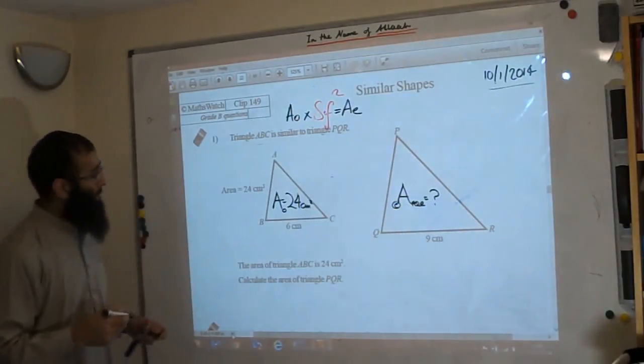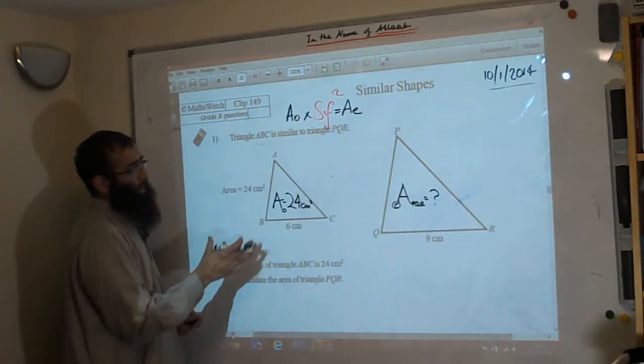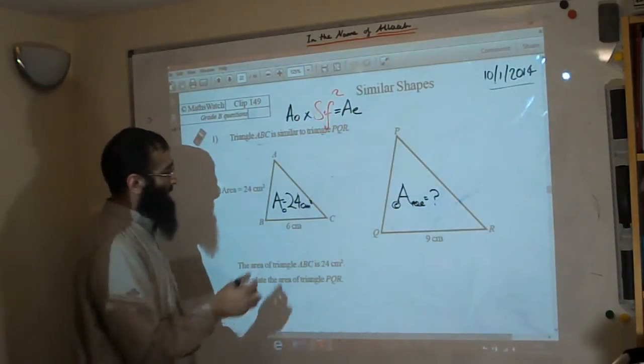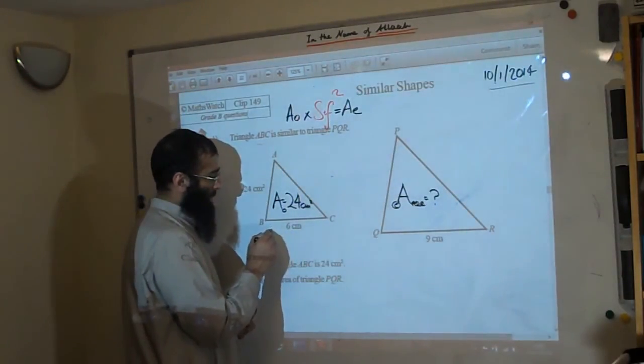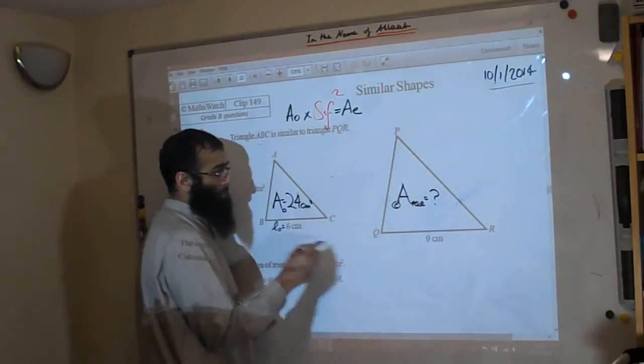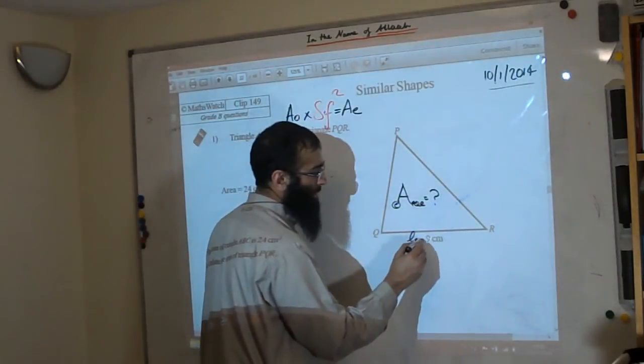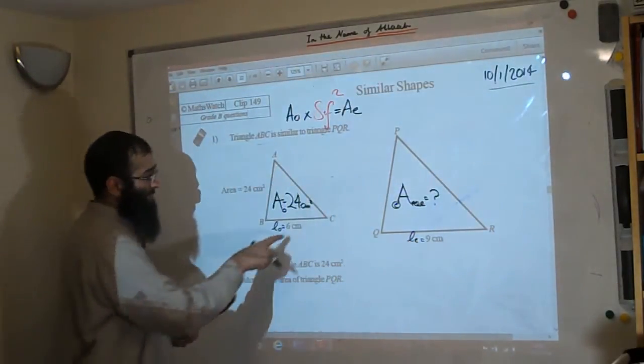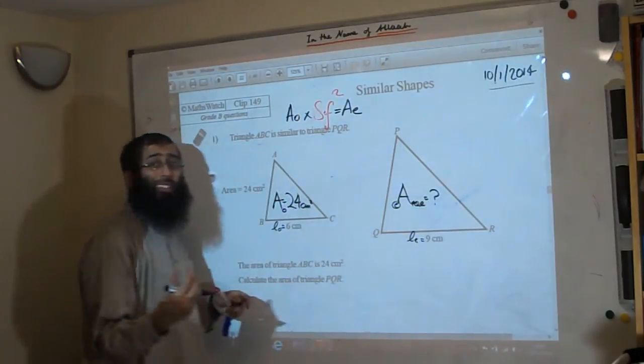Now let's look at the measurements. At the moment we need to first establish the scale factor. We look at this length here, I'm going to call this my length original, and this is going to be called my length enlarged. From these corresponding sides we can work out what the scale factor is initially.